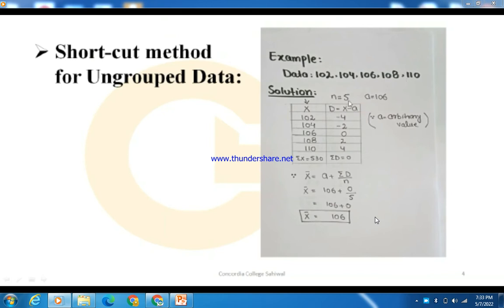We know that x-bar equals a plus summation d over n. Now we have five values in this example. We choose an arbitrary value a.